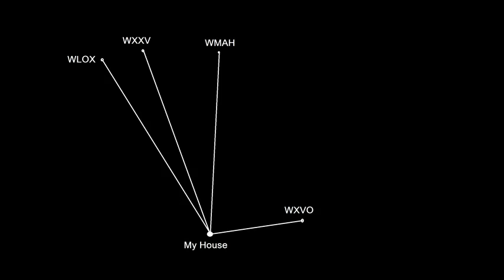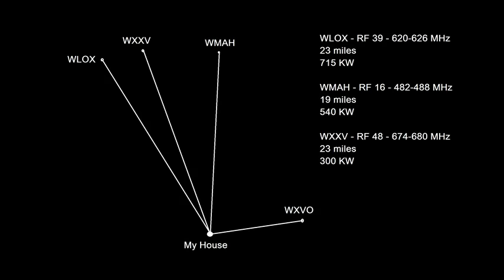Let me share with you an example of my scenario. At the bottom of this slide is my house, and at the top are the three stations that I get from my small antenna in my attic. These three stations give me all the major networks that I need. They are all in the UHF range, which is RF channels 14 and above, and each one transmits at a pretty good rate of power, with WXXV being the weakest at 300 kilowatts.